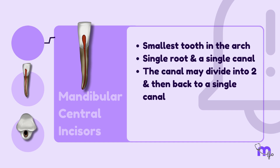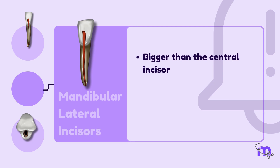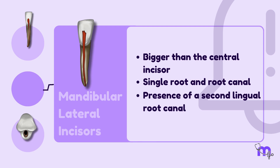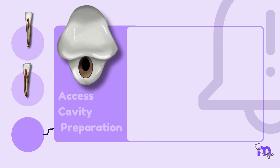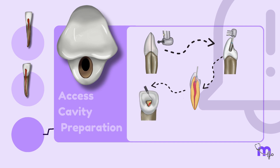And then back to a single canal. Axis opening is more ovoid. Mandibular lateral incisor: bigger than the central incisor, single root and root canal, with possible presence of a second lingual root canal. Mode of axis opening for all incisors: burr initially placed perpendicular to the long axis of the tooth, then parallel to the long axis, till the drop is felt, accessing the pulp chamber which is deroofed, and straight line axis established.